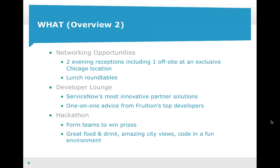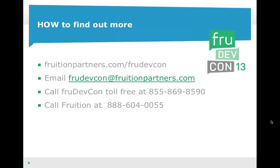Self-registration is going to begin about six weeks before the conference, and you'll receive an email once you've registered giving you direction on how to choose your classes. There are going to be two evening receptions — one will be off-site at an exclusive Chicago location to be revealed soon. We've also set up lunch roundtables where Fruition experts will staff tables to facilitate conversation and give you another opportunity to learn from your peers during this conference.